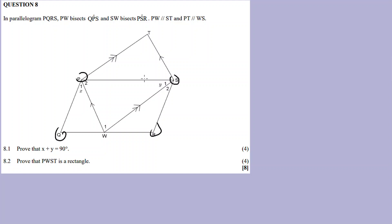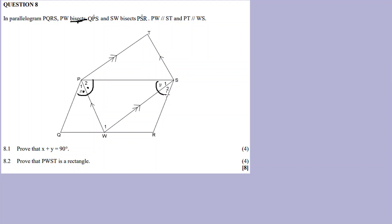So PQRS is a parallelogram. PW bisects angle QPS. A line that bisects an angle means that the angles are equal. So PW bisects this angle, meaning angle 1 and angle 2 are both equal to x. Also, PS bisects angle PSR - this angle is bisected, so these two angles are equal as well, both equal to y.